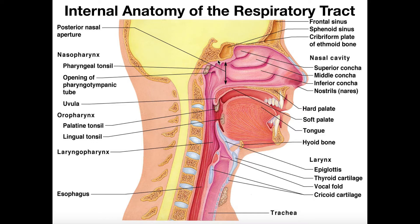First, let's begin with the most superior part of the respiratory tract. This is the nasal cavity — you can tell right here, this is of course the nose. We're looking at a mid-sagittal section here. This entire nasal cavity is just a space, but it has some important features in it and surrounding it.